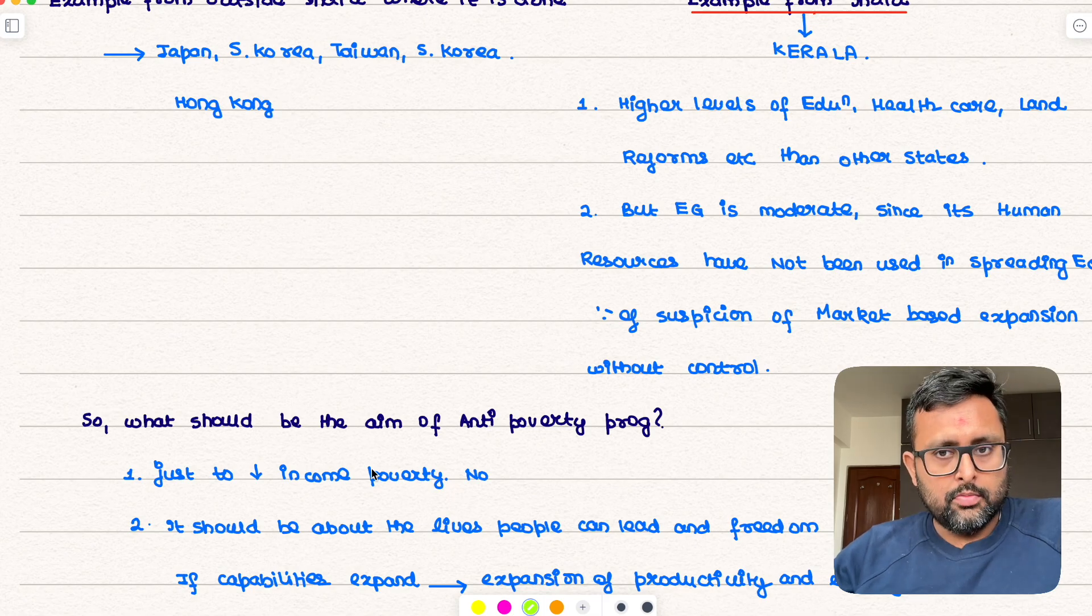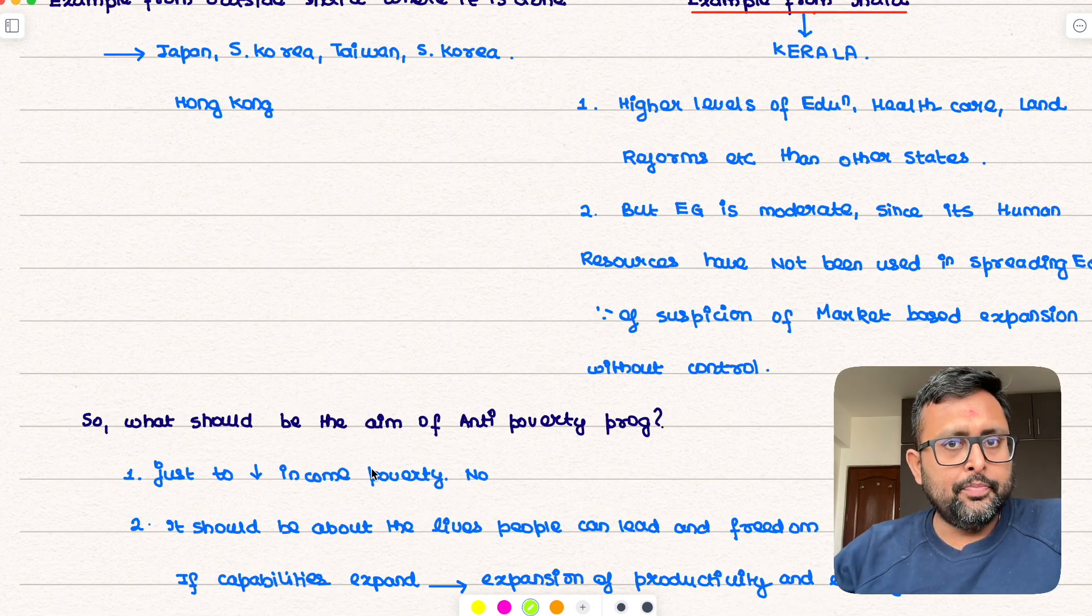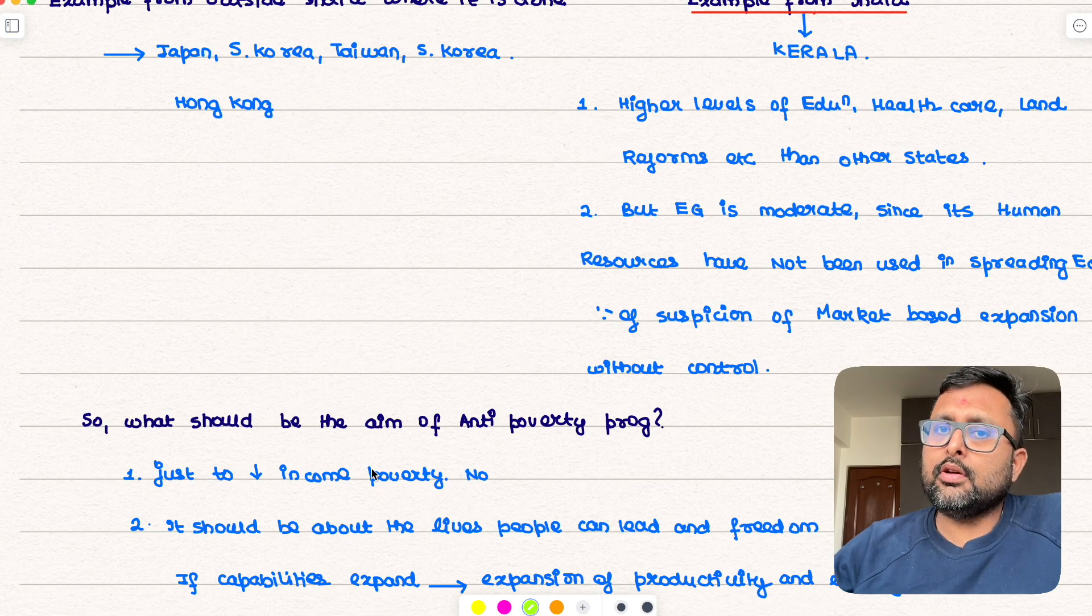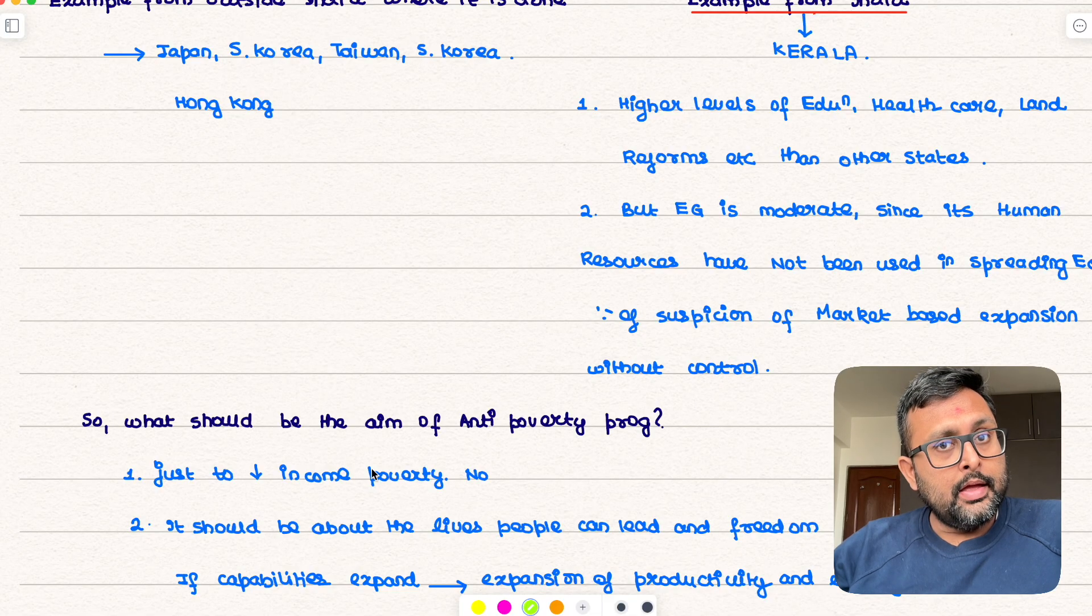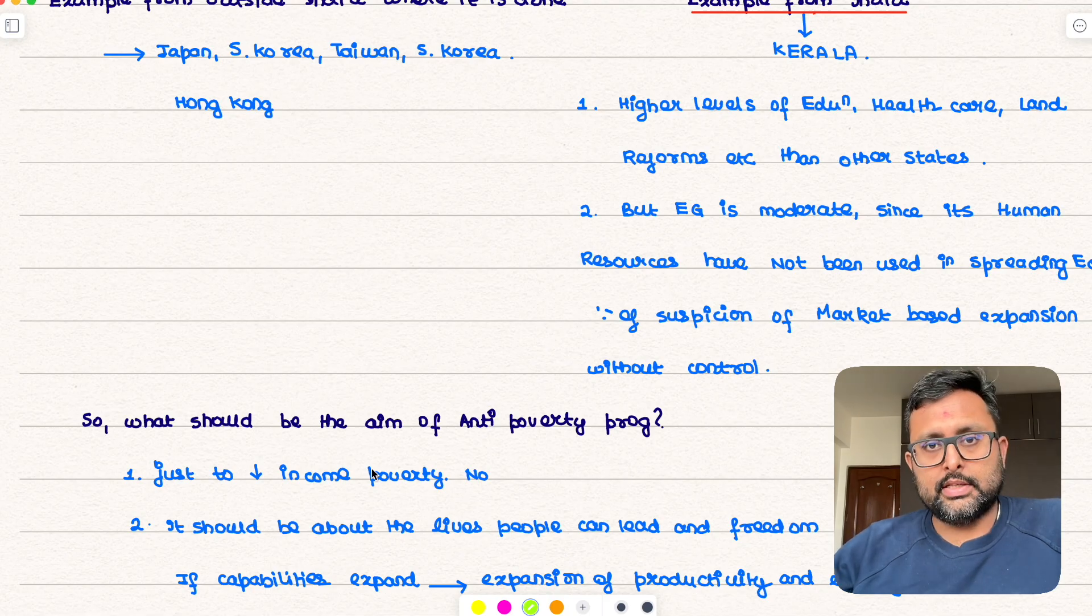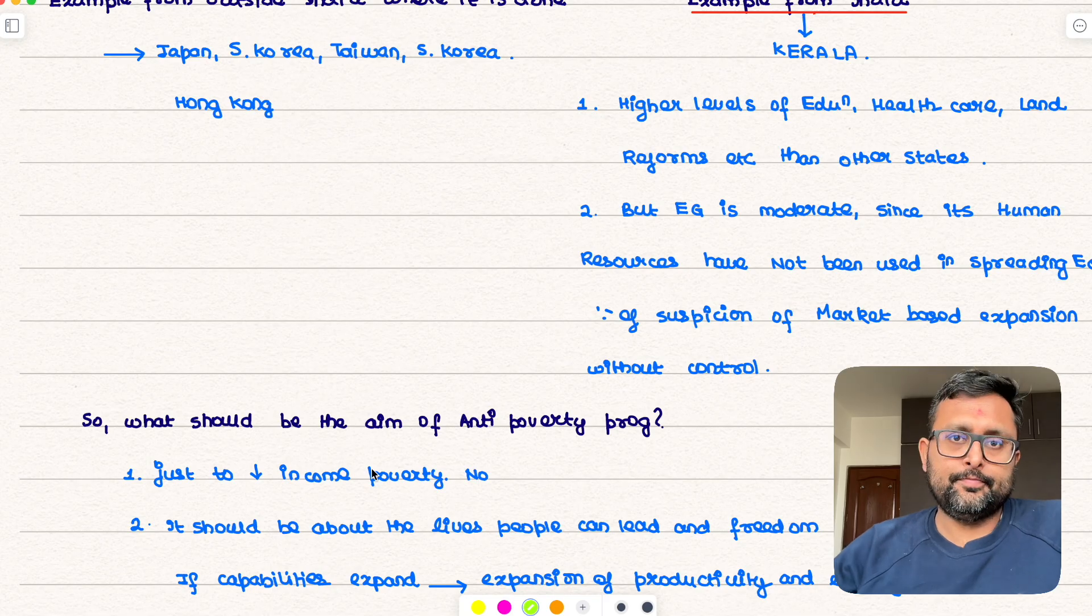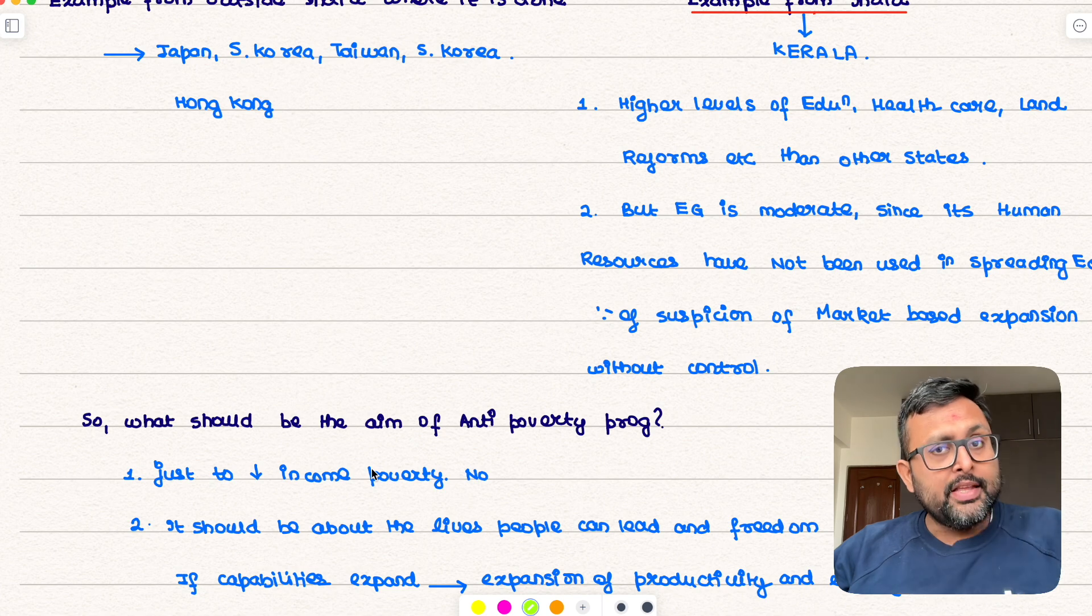They have the market-based expansion also, other states. In Kerala what happened was, now the downside of this was that economic growth remained moderate. It was not high as the other states of the country. Economic growth remained moderate but because human resources were quite developed, they were healthy and they were educated. But there was a kind of suspicion in the minds of human resource of that state that if you have the market-based expansion without state control it is going to hamper the economic growth. So everything has to be seen in the context.